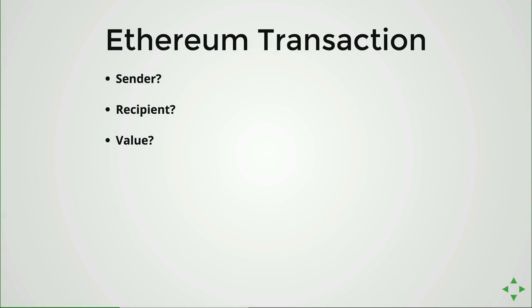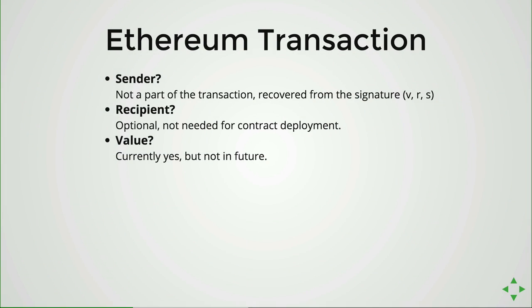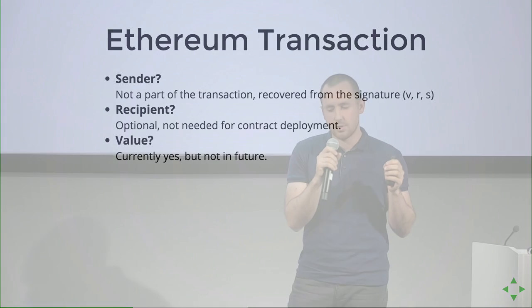So what do we need in a transaction? The most obvious things are a sender, a recipient, and a value. But the sender is not really part of the transaction explicitly, because we can recover the sender from the signature. The signature consists of those three elements — V, R, S — at the end. So the sender is encoded in the signature but not explicitly part of the transaction.